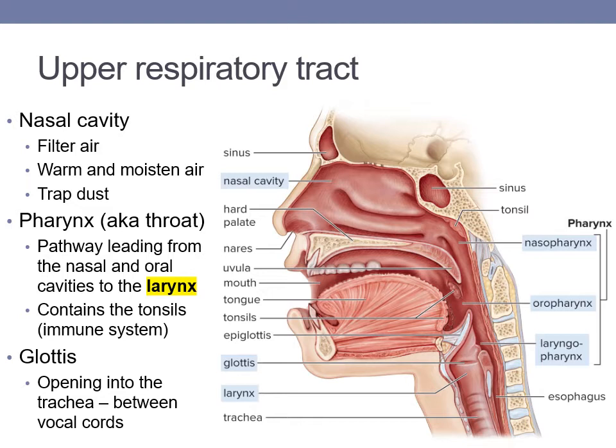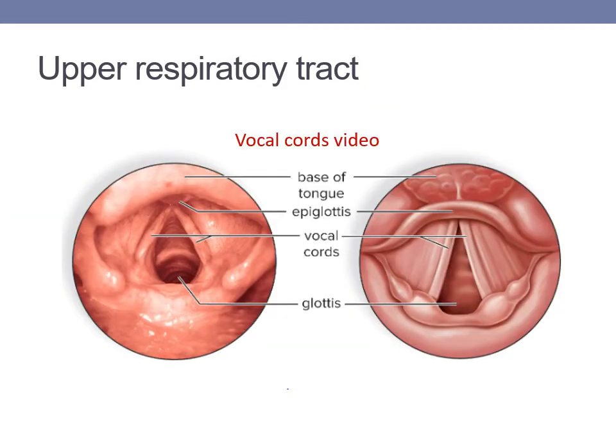The glottis is the opening into the air tube, also known as the trachea. This opening is in the center of the vocal cords. In this figure, you can see the base of the tongue at the top and the epiglottis that covers the glottis, or opening, to prevent food from entering the trachea. On the left are the vocal cords of someone who is not making any sounds, but when sounds are made, the vocal cords vibrate to produce sounds as the air passes through.